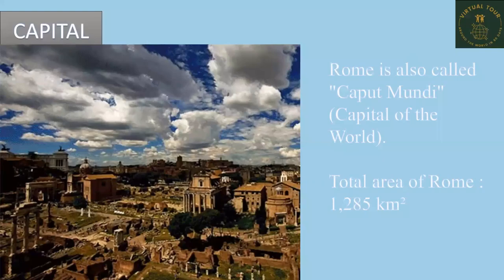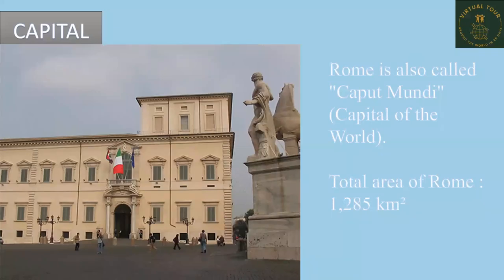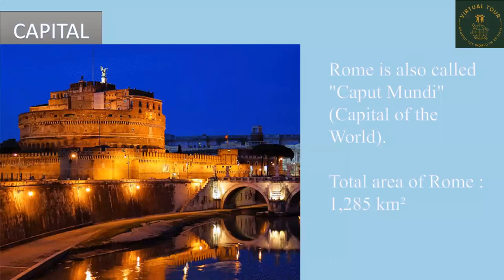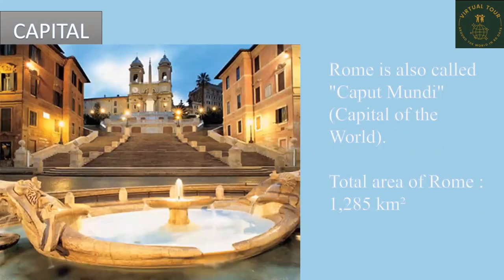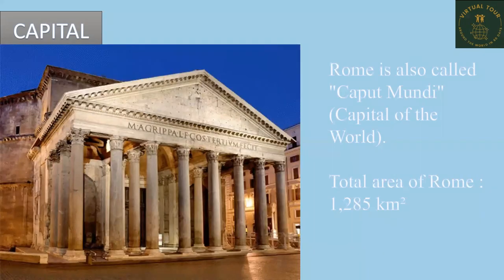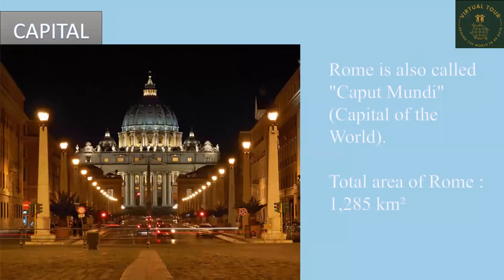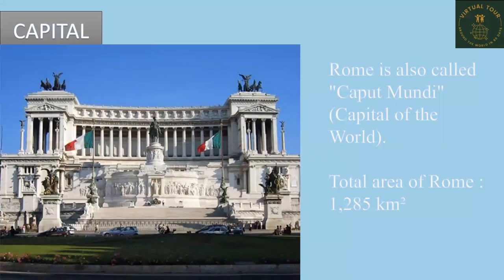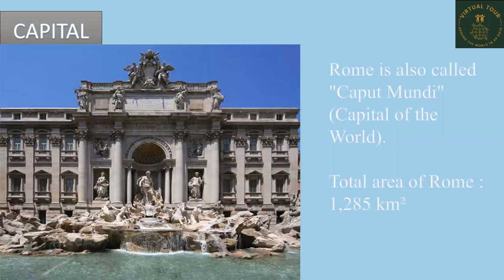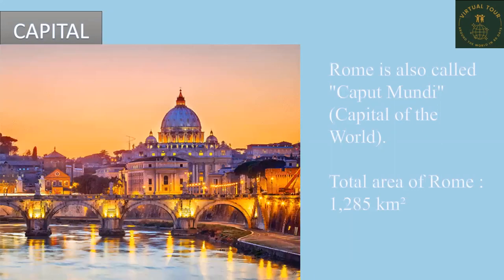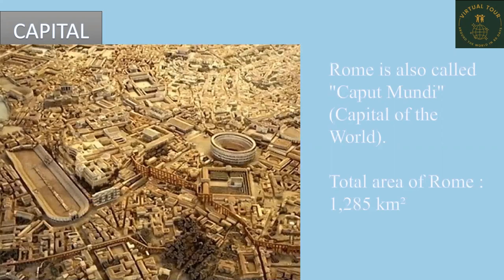The capital of Italy is Rome. You can see some beautiful glimpses of this place. It is also named Caput Mundi, which is referred to as the capital of the world, and it covers an area of around 1,285 square kilometers.